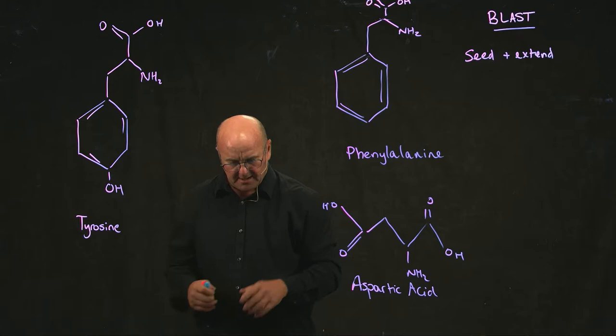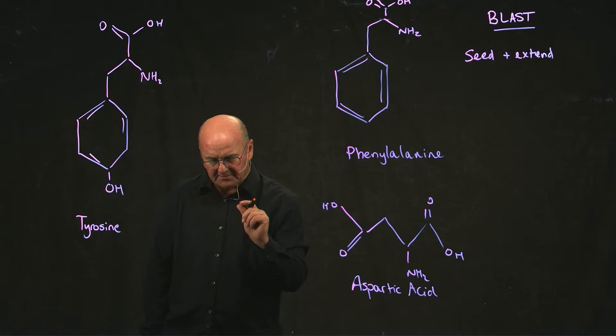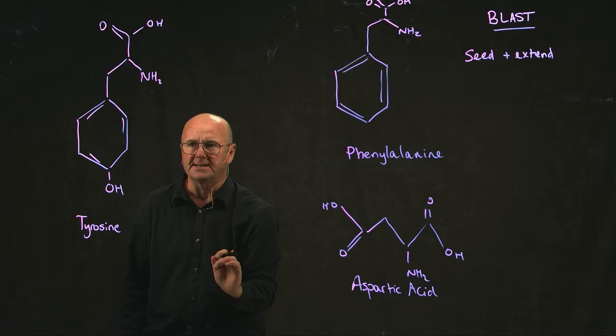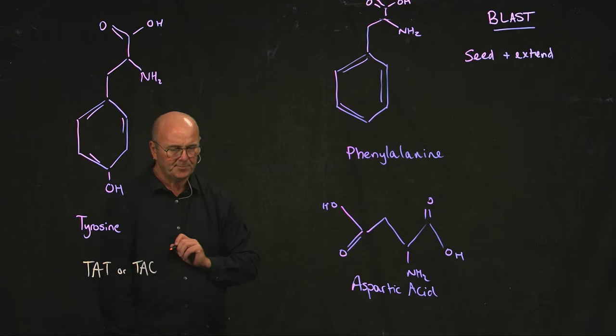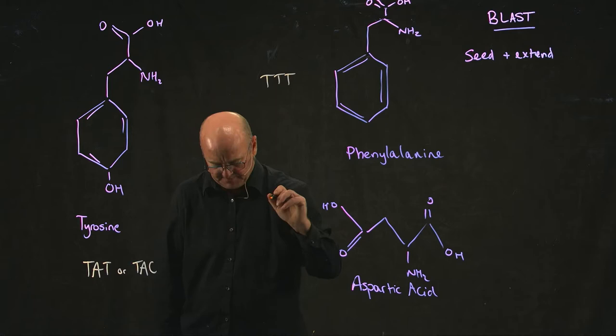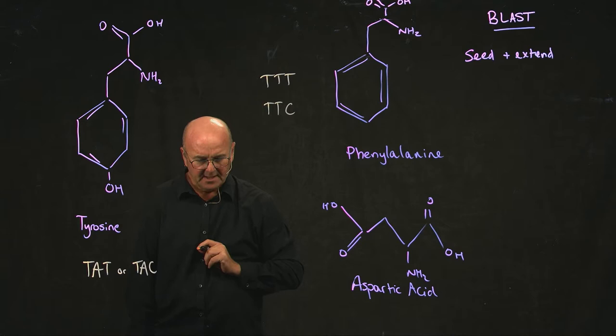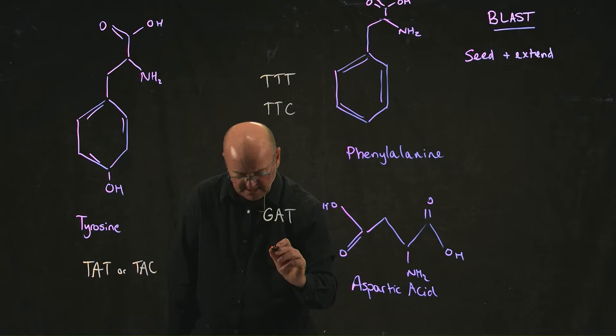Now, here's where we're going to get a little tricky. Remember, there are three bases that are used to encode each amino acid. So for tyrosine, you can encode tyrosine with TAT or TAC. With phenylalanine, you can encode phenylalanine with TTT or TTC. And with aspartic acid, you can encode aspartic acid with GAT or GAC.